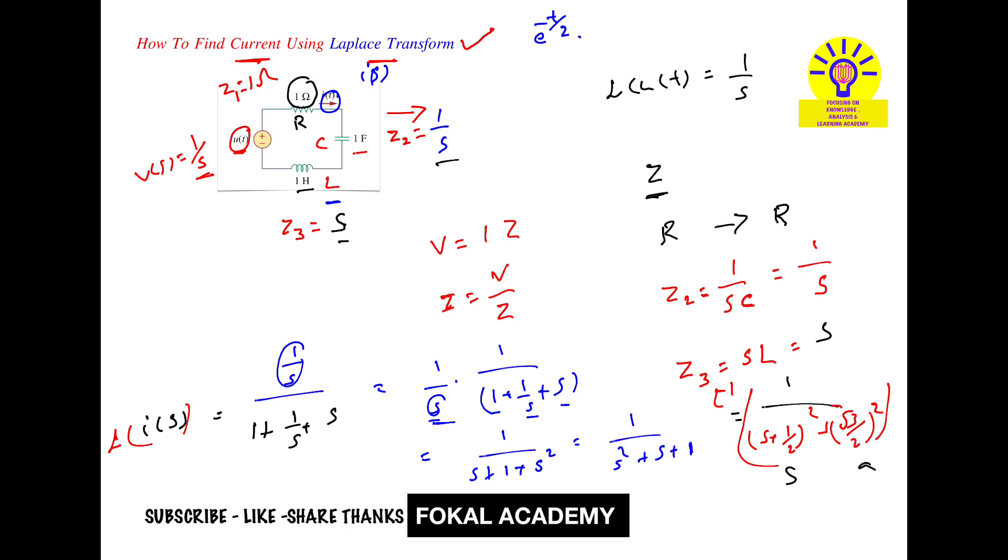1 by A, where A is root 3 by 2, gives 2 by root 3. Sine of root 3 by 2 times T times U of T. This is the inverse Laplace transform for this function.